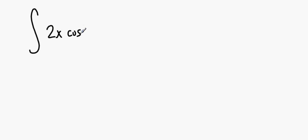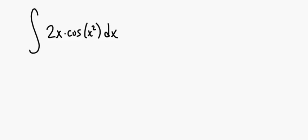Consider: what if I'm looking for the anti-derivatives of 2x times cosine of x squared dx? You're thinking to yourself, well, it's a product — I've got a product going on there — but we don't really have a product rule for integrals, so there's not really anything to do with that.